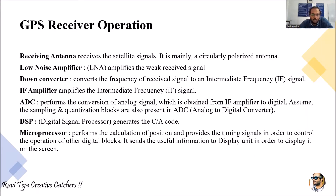The GPS receiver needs to receive signals, so it has an antenna which receives signals directly from the satellite. The antenna used here is a circularly polarized antenna, which helps in gathering the strongest signals directly from the satellites.